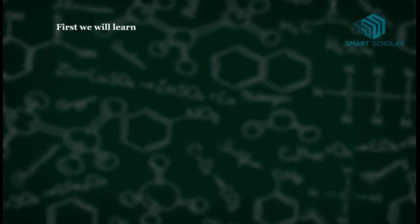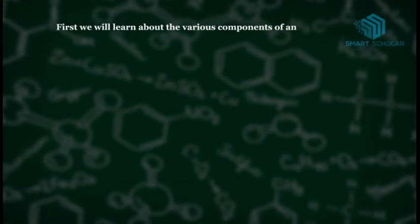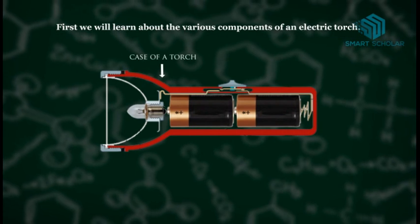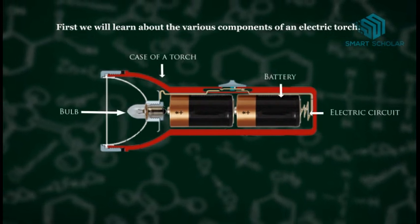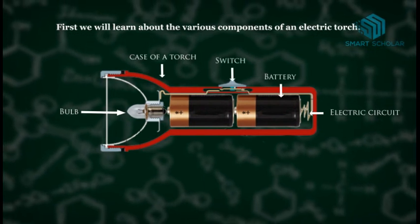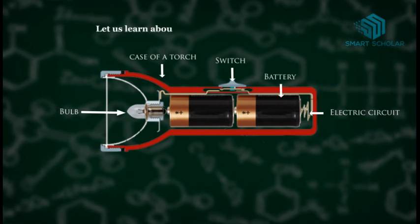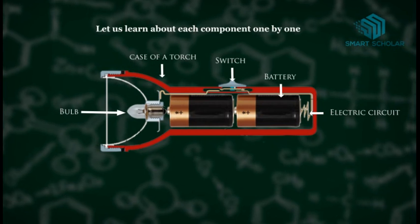First, we will learn about the various components of an electric torch: 1. Case of a torch, 2. Battery, 3. Bulb, 4. Electric circuit, 5. Switch. Let us learn about each component one by one.